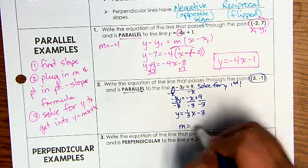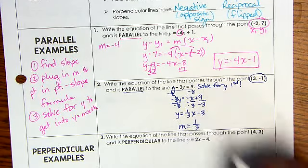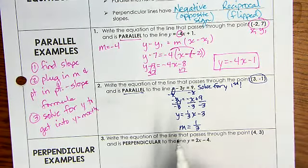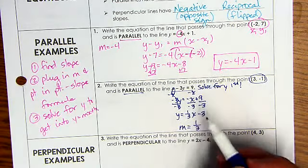So for this one, my slope is 1 third. So I'm going to use this slope and this point, and I'm plugging into the point slope form again.